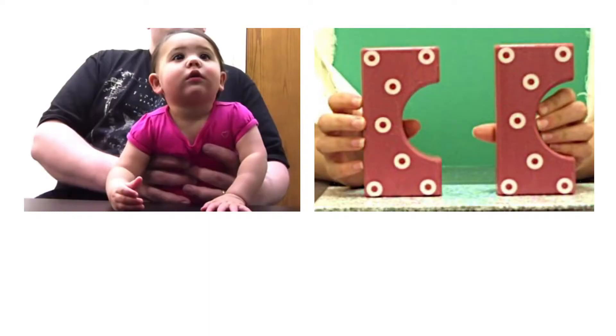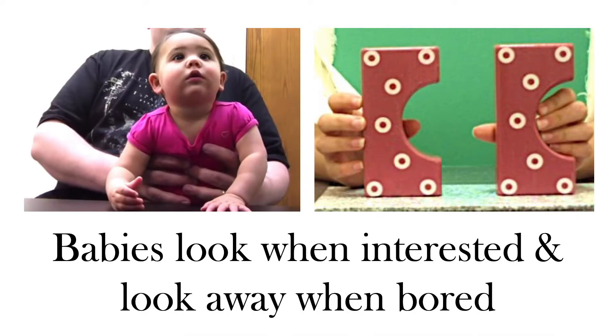The babies come into the lab and are seated on a parent's lap facing a puppet stage. On the puppet stage, they see various objects dancing around. We measure the amount of time that they look at these objects. Babies, like adults, look at something when they find it interesting, and when they get bored, they look away.